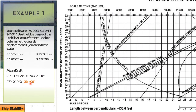We take our 23'08" and plug it into the mean draft axis on the left side of the chart — that's just about 23 and three-quarters feet. Looking back at the question, we're in fresh water, so we use the fresh water curve, not the bottom one. Our intersection point on the freshwater displacement curve gives us 12,000 tons. So the answer is 12,000 tons.